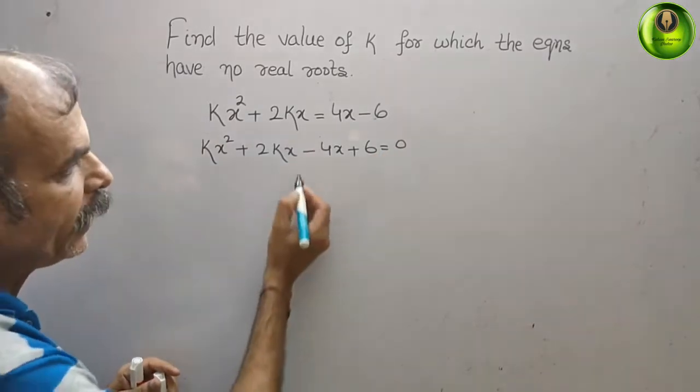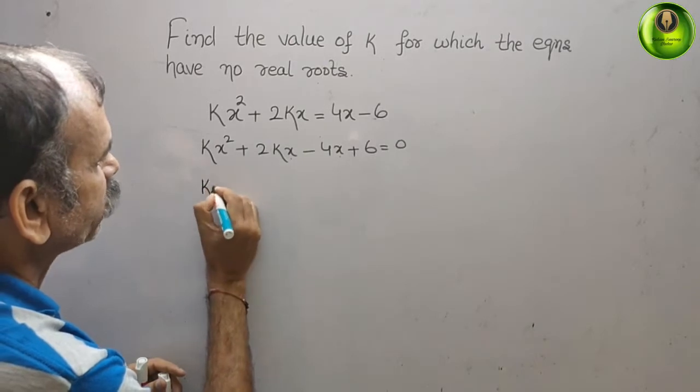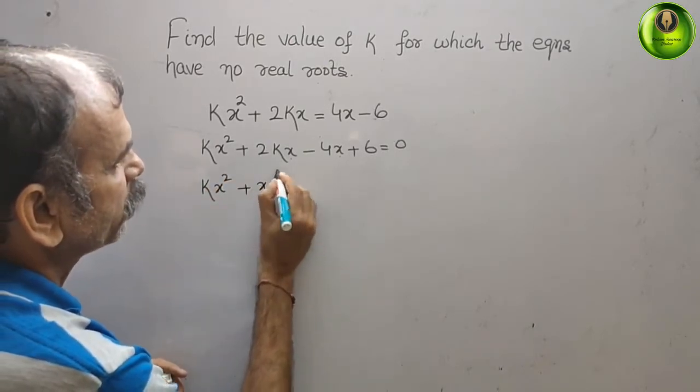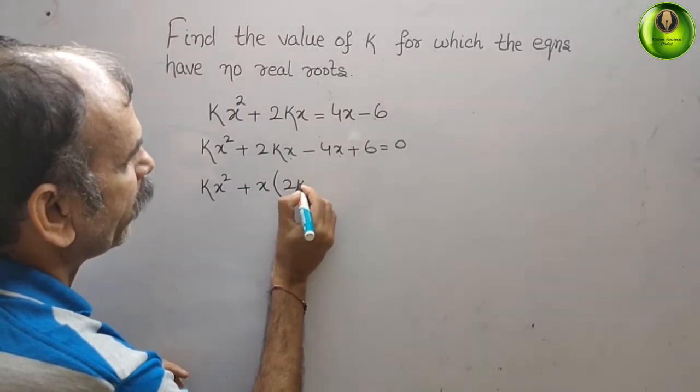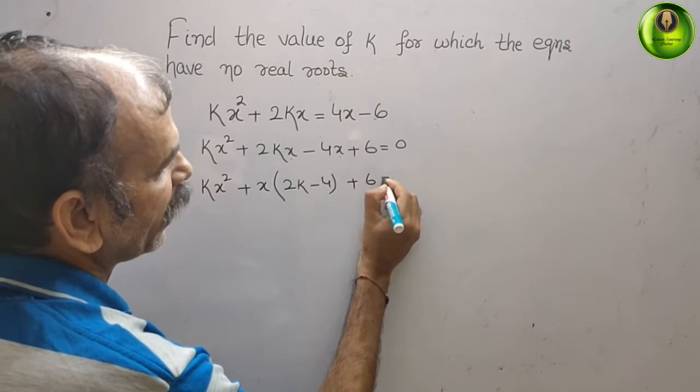Now you can take x as common here. It will be kx² + x(2k - 4) + 6 = 0.